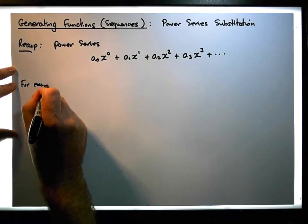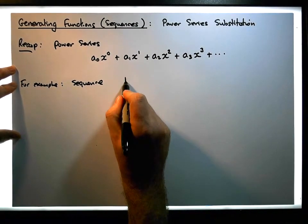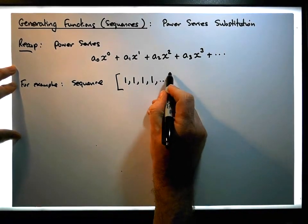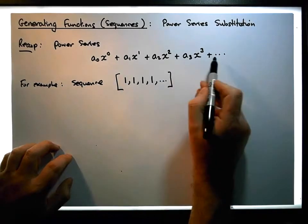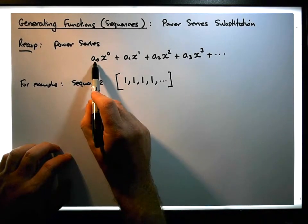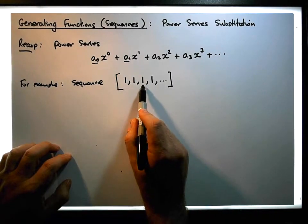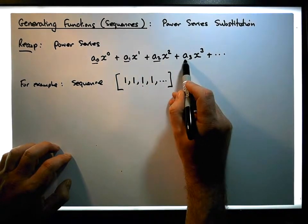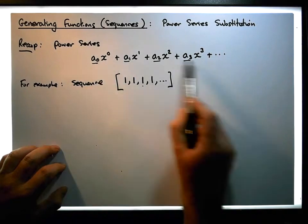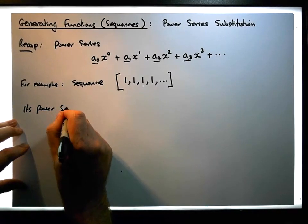For example, let's consider the sequence that looks something like this: one, followed by a one, followed by a one, followed by a one — and so on. This is our sequence, and what we want to do is encode this sequence into a power series. It's straightforward: we take the first term in the sequence and that becomes the first coefficient, a-zero; the second term becomes the second coefficient, and so on. This particular sequence, represented as a power series, looks something like this.